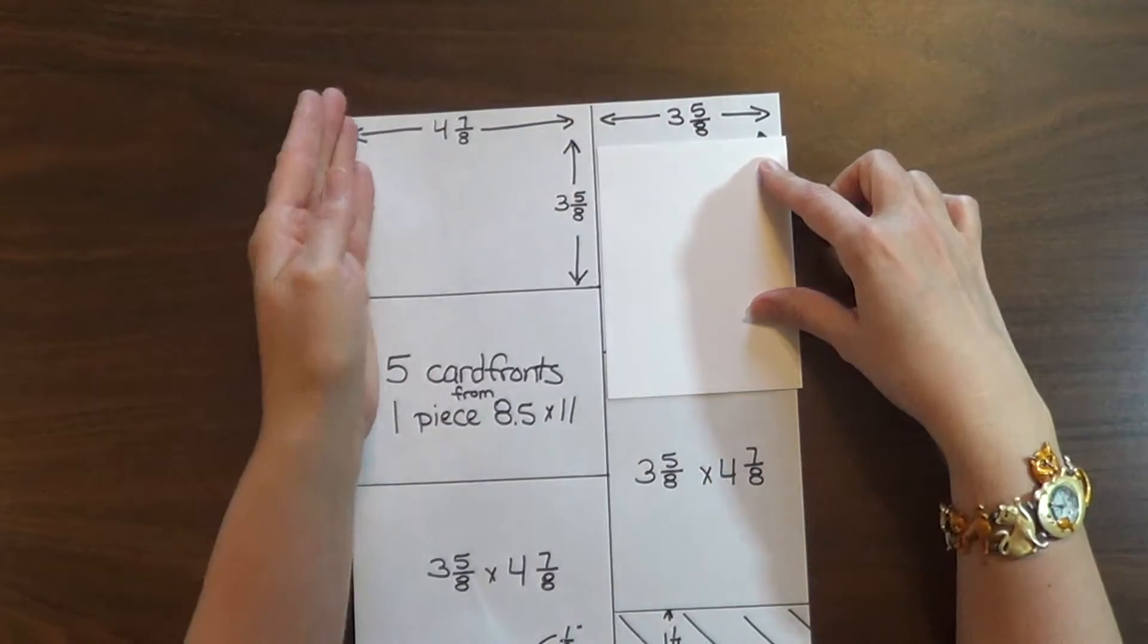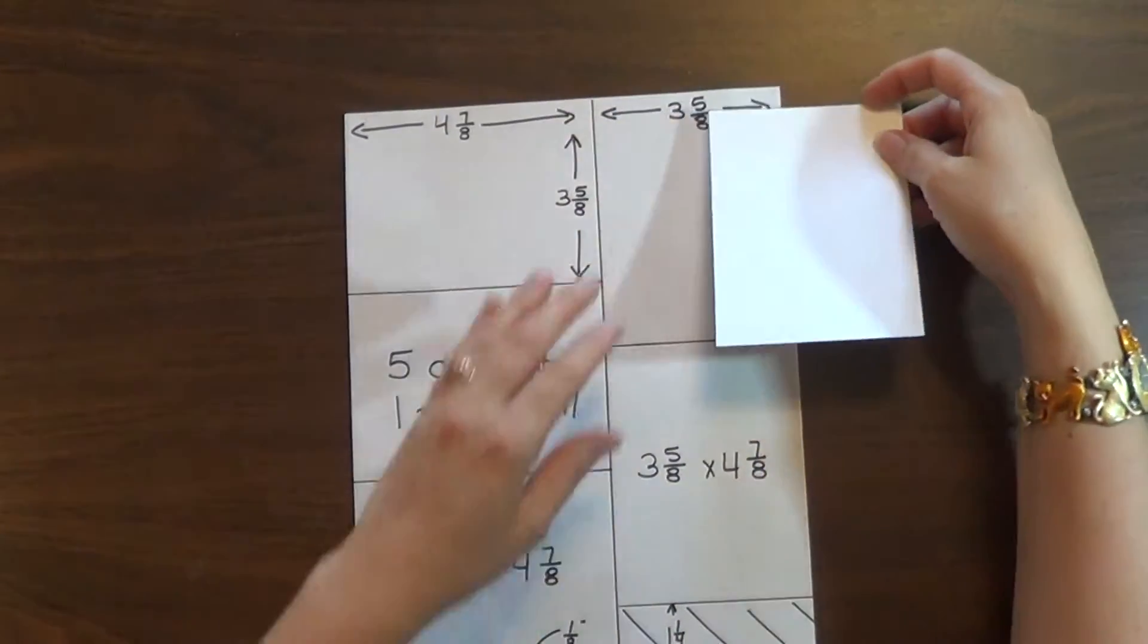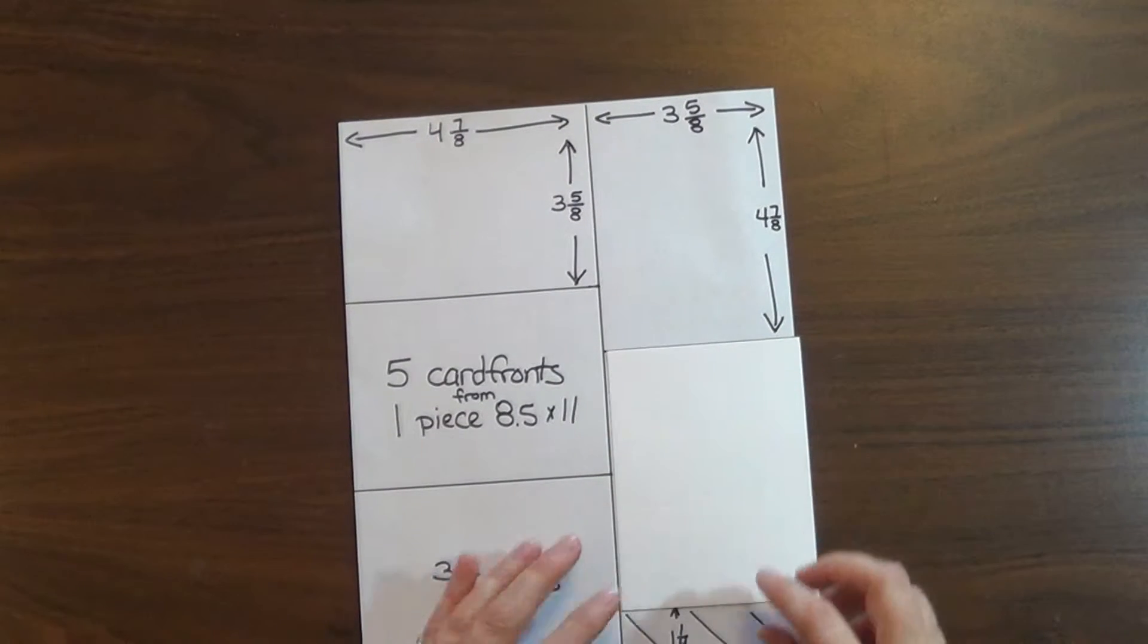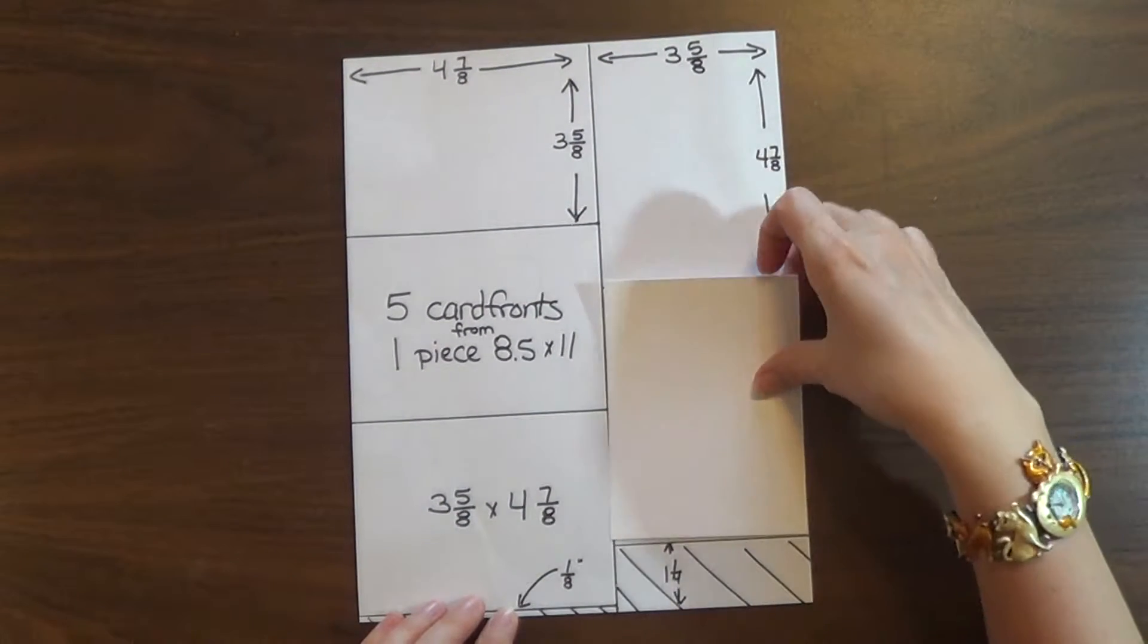Three and five-eighths. If you cut your cardstock four and seven-eighths, you're left with three and five-eighths. Then you take this three and five-eighths inch strip, cut it into four and seven-eighths inch sections. You'll be left with this small portion at the end that you will toss.